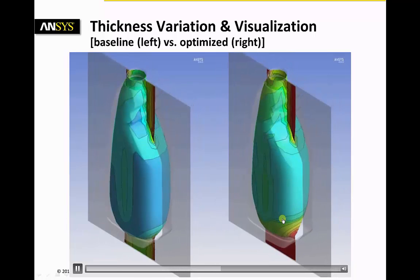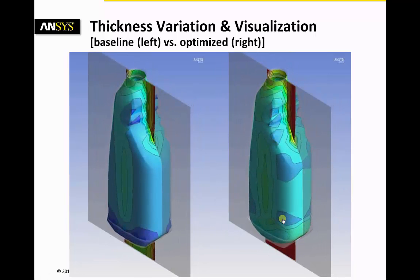The extrusion blow molding process is simulated. Two different settings are shown. A baseline setting on the left hand side and an optimized setting where the initial thickness of the preform is adjusted to meet predefined final thickness variation.